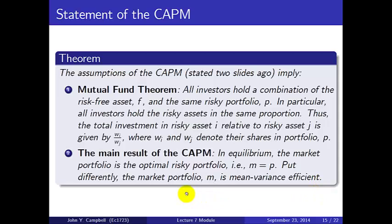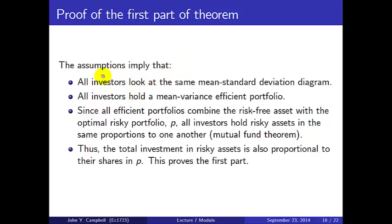How do we prove that? The first part is easy. The assumptions imply that all investors look at the same mean standard deviation diagram, they all hold a mean-variance efficient portfolio, and since all efficient portfolios combine the risk-free asset with the optimal risky portfolio p — that's the mutual fund theorem — all investors hold risky assets in the same proportions. So the total investment in any risky asset from all investors together is proportional to their shares in p.